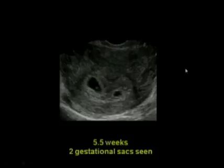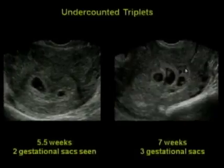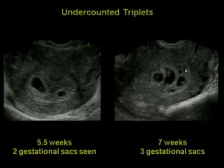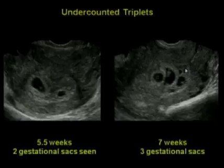There's another case: five and a half weeks, two gestational sacs seen. About a week and a half later — whoops — there aren't two, there's three. These kinds of appearing twins or appearing fetuses are not that uncommon.